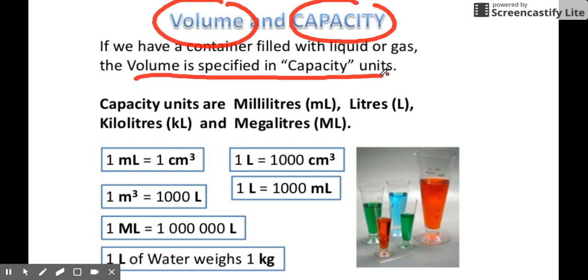What are these common capacity units? I'm sure you're familiar with these: milliliters (mL), liters (L), kiloliters (kL), and megaliters (ML), in which these capacity units can be converted to their cubic counterpart units.